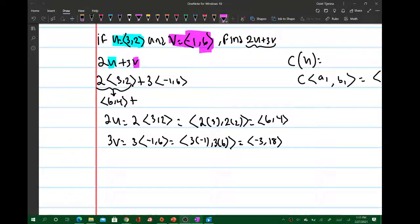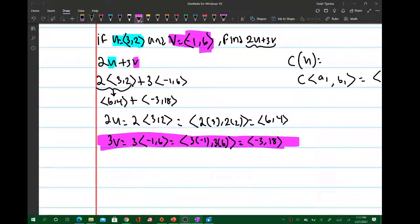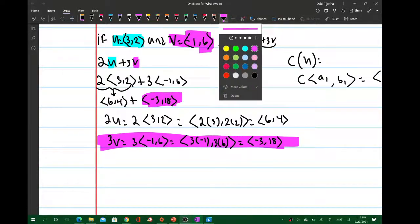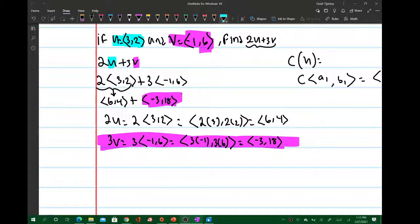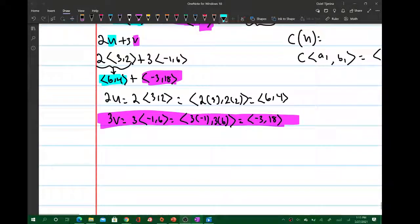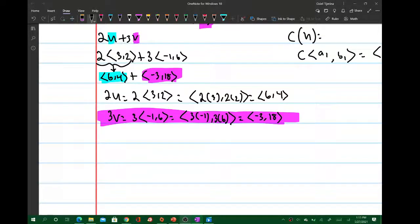So here, for this part, we can put this as <-3, 18>. So we have this and we also have this. Now let's go ahead and use vector addition to simplify this: <6, 4> plus <-3, 18>.